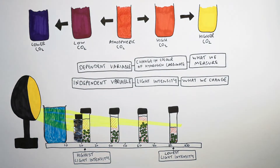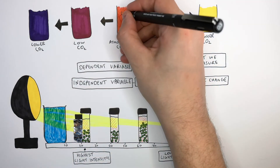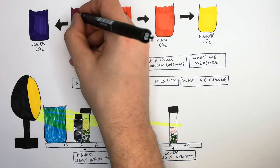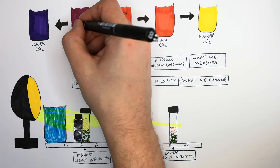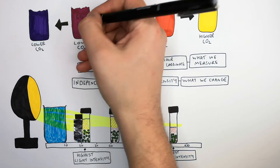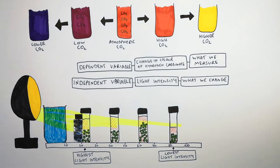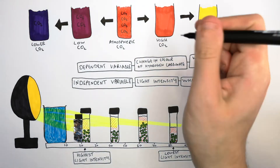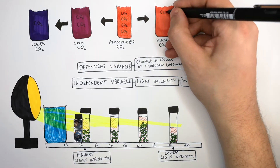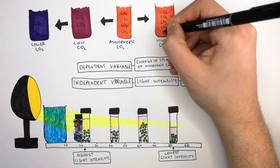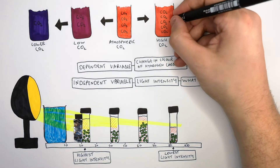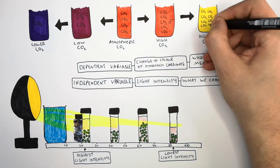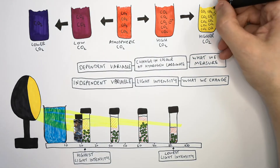So remember: hydrogen carbonate indicator is red at atmospheric CO2 levels. Decrease the carbon dioxide concentration and it turns a purpley pink color. Decrease it further and it turns a blue-purple. Increase the CO2 concentration and it goes from red to orange. Increase it even further and it turns yellow.